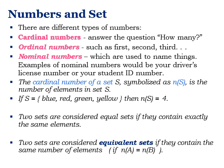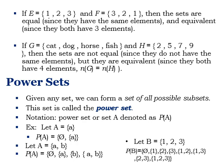Two sets are equal if they contain exactly the same elements. Two sets are equivalent if they contain the same number of elements — that is, they have the same cardinality. For example, if E = {1, 2, 3} and F = {3, 2, 1}, then E and F are both equal (same elements) and equivalent (both have 3 elements).